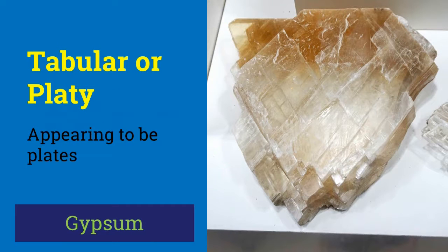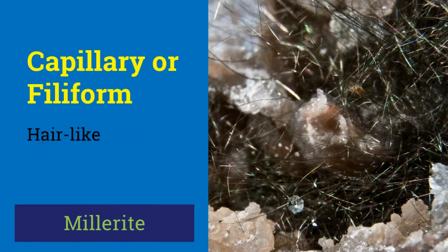Crystals of gypsum and granite appear to be like plates or thick sheets stacked together, and hence their habit is called tabular or platy habit. Hair-like or thread-like crystals are said to have capillary or filiform habits. Serpentine and millerite crystals show this.